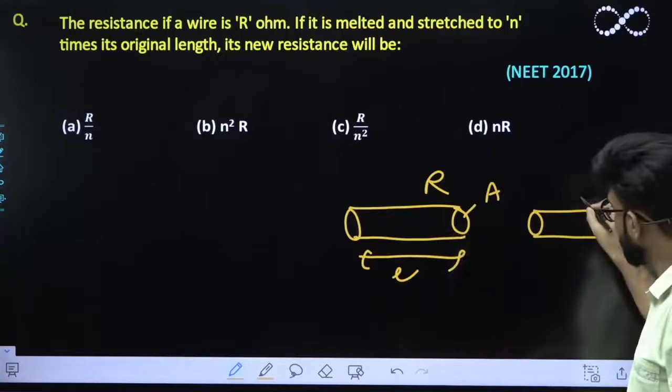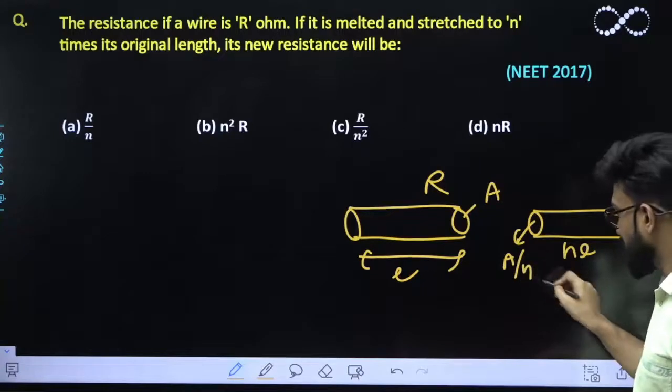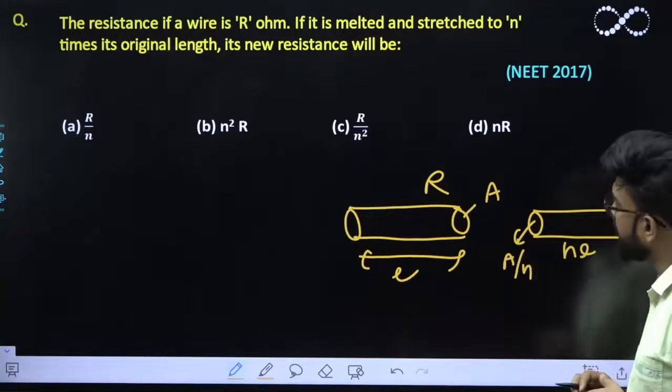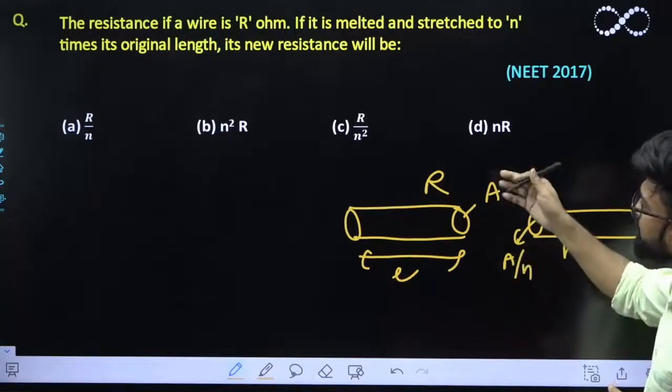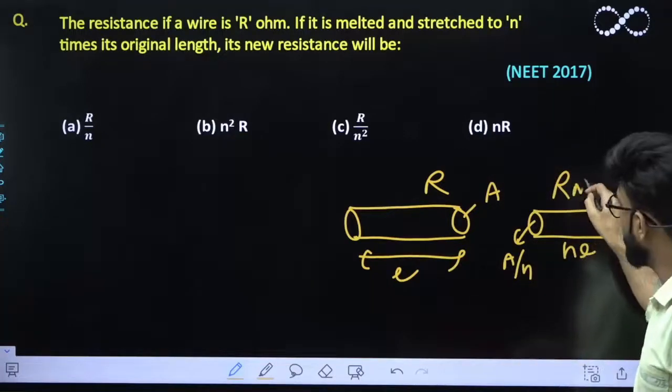If it is melted and its length becomes n times l, obviously its area would become 1/n times. Now what would be the new resistance that you need to find? Let its resistance be R_new.